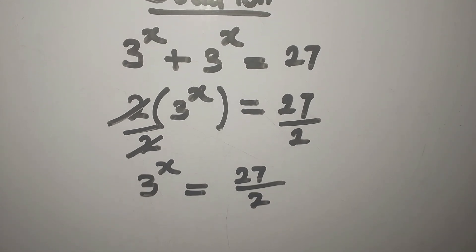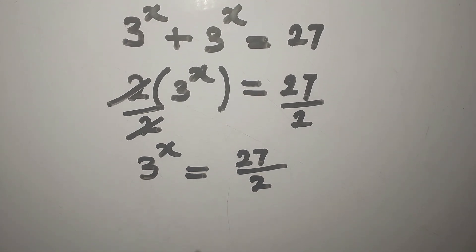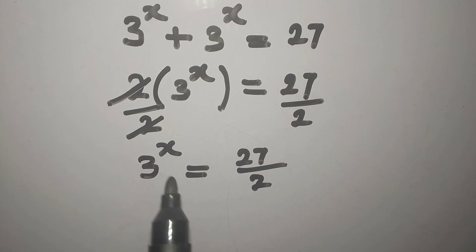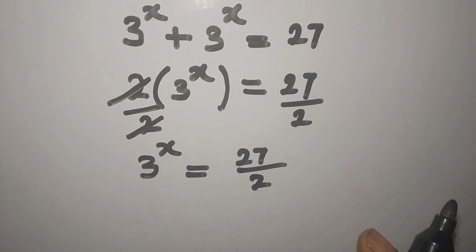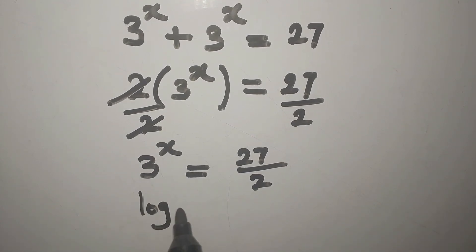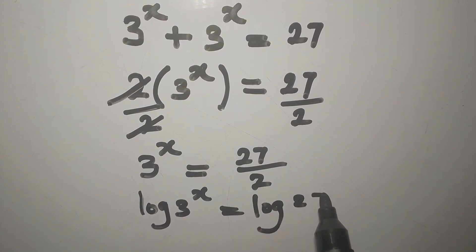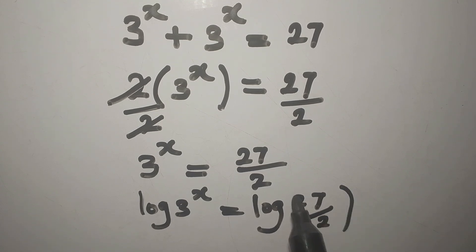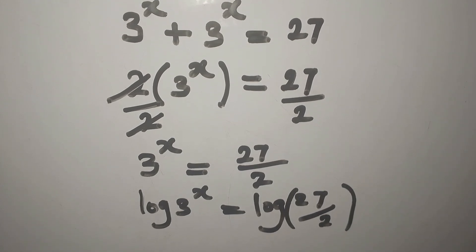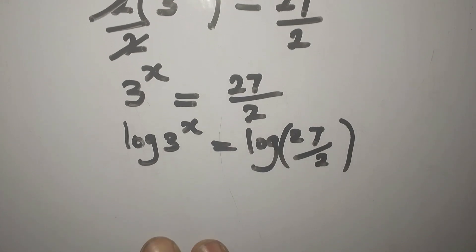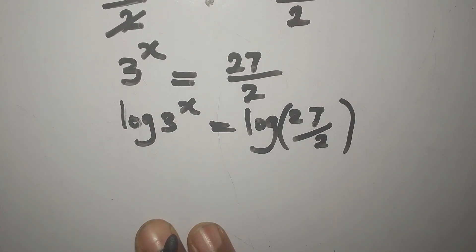At this point we are going to take the log of both sides. So we have log of 3 to the power of x equal to log of 27 divided by 2, which we can write in brackets.